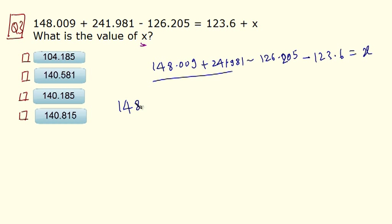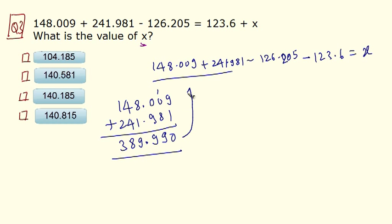Now let's add these two terms. So 148.009 plus 241.981. So 9 plus 1 is 10, 1 carry. 8 plus 1 is 9. 9. 8 plus 1 is again 9. 4 plus 4 is 8. 2 plus 1 is 3. So we have 389.990.